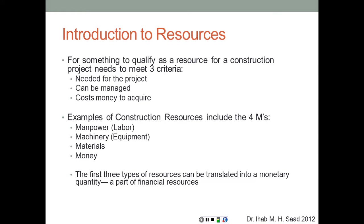Examples of construction resources include the four M's: manpower (labor), machinery (equipment), materials, and money — the most universal resource, since it can be translated into any of the other three. Hiring labor, purchasing or renting equipment, and buying materials all cost money, so the first three resource types can be expressed as a monetary quantity.